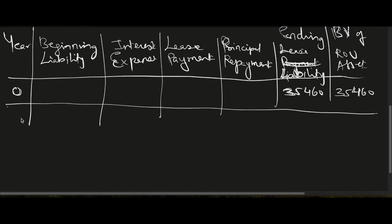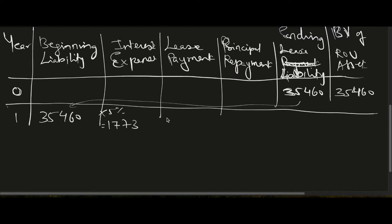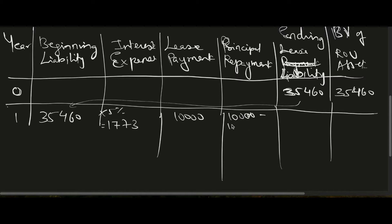For Year 1: the opening (beginning) liability is 35,460. Interest expense is 5% of 35,460, which equals 1,773. The lease payment is 10,000. Principal repayment = 10,000 minus 1,773 = 8,227.